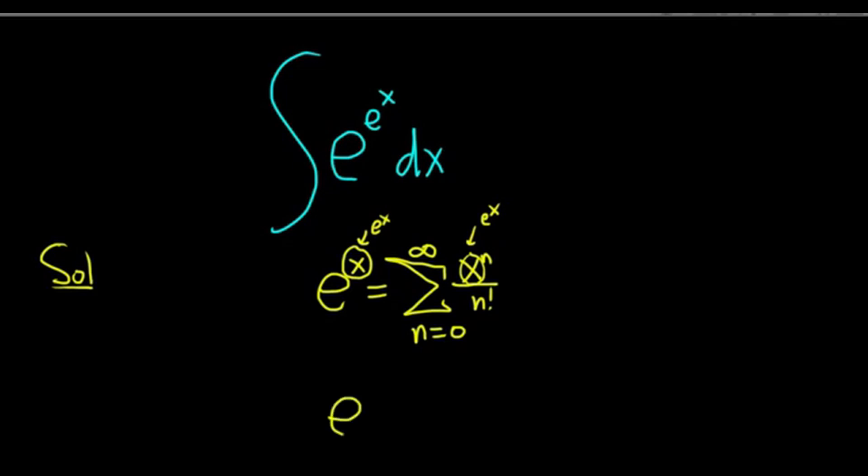So this is e to the e to the x equals the infinite sum as n runs from 0 to infinity. This becomes e to the x to the n—that's our x—over n factorial.